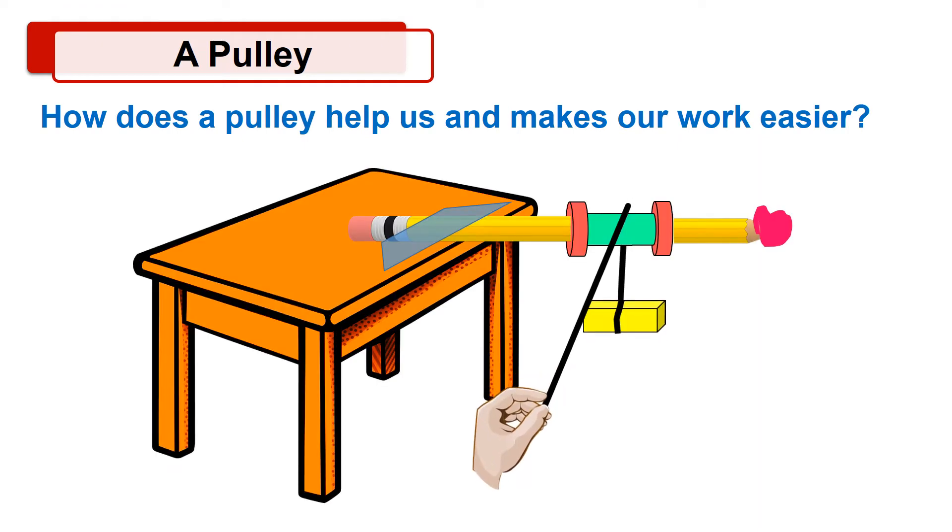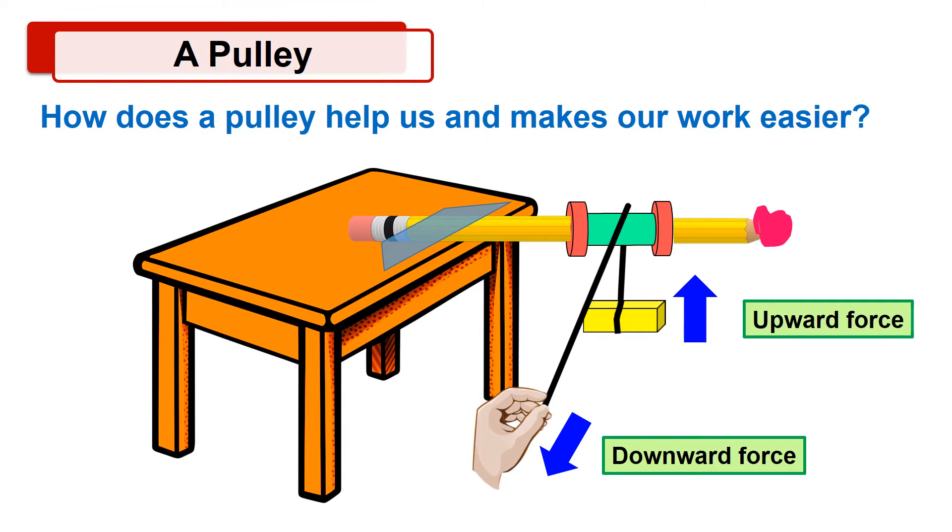Now, let's see how does a pulley help us and make our work easier. When we pull the rope by applying force in the downward direction, the weight is lifted in an upward direction, because of which we can easily lift heavy objects and make our work easier.